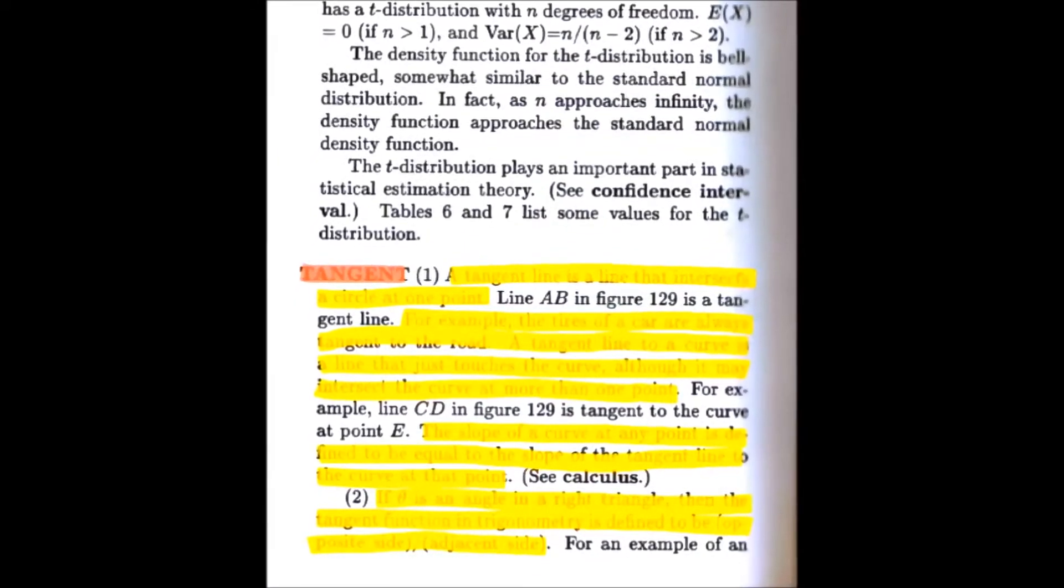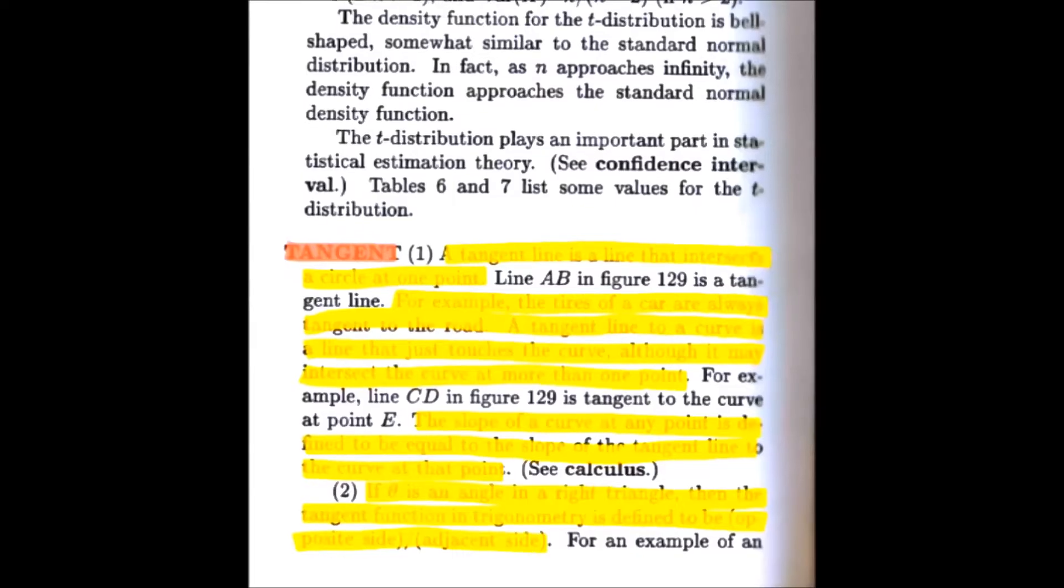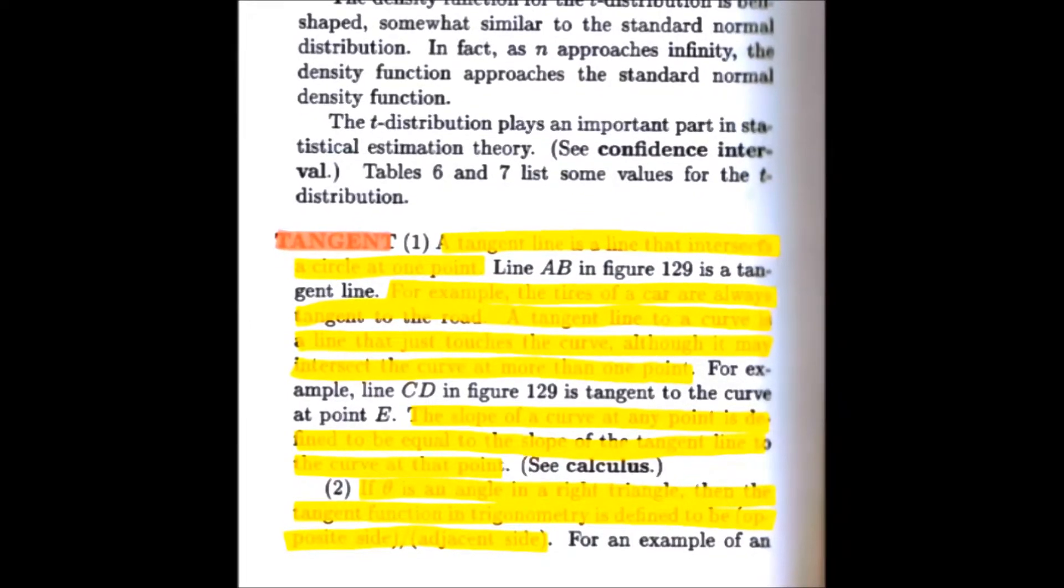The first one says a tangent line is a line that intersects a circle at one point. For example, the tires of a car are always tangent to the ground. A tangent line to a curve is a line that just touches the curve but it may intersect it at more than one point. The slope of the curve at any point is said to be equal to the slope of the tangent line at that point. Well, that's a topic covered more in calculus.